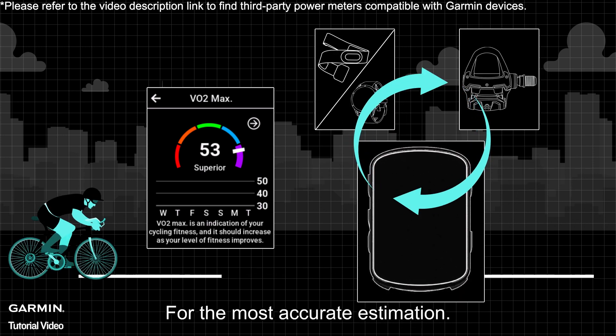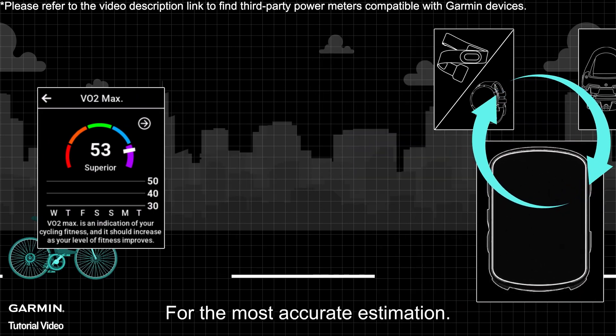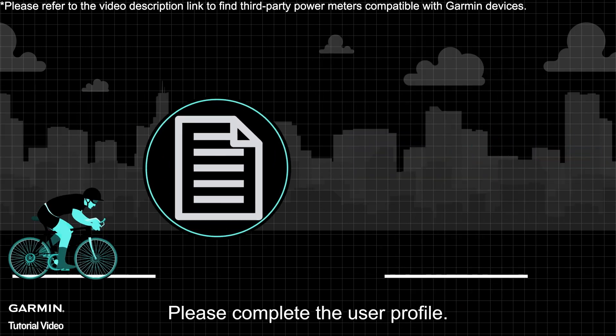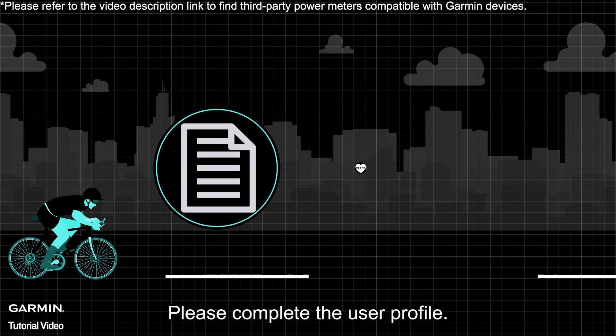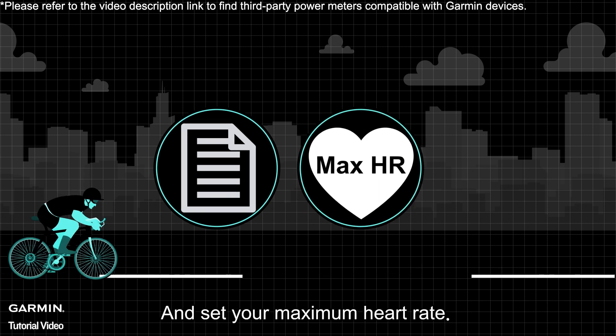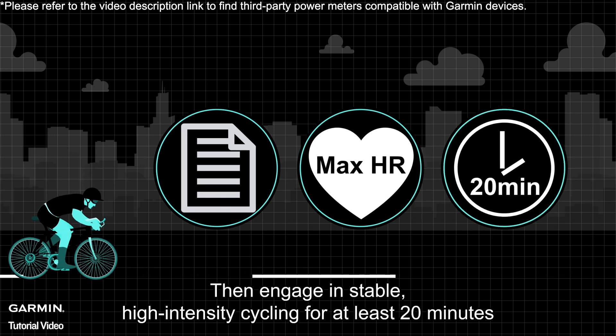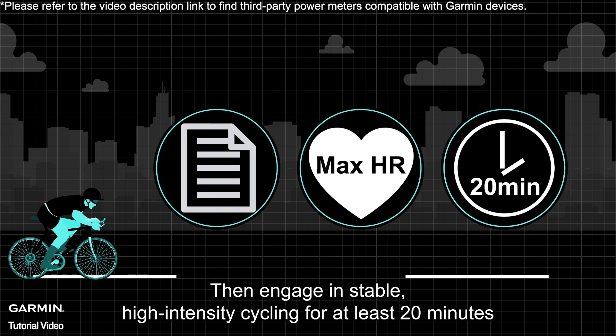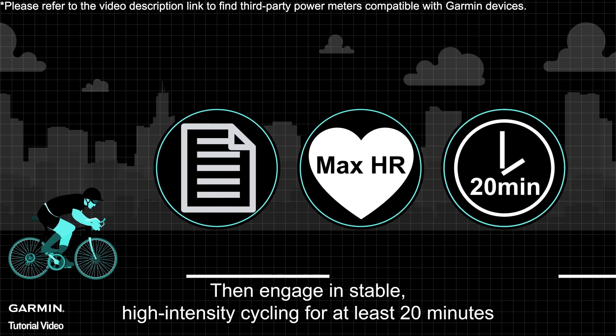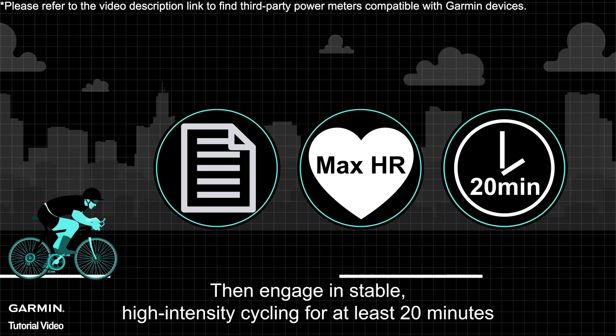For the most accurate estimation, please complete the user profile and set your maximum heart rate. Then engage in stable, high-intensity cycling for at least 20 minutes.